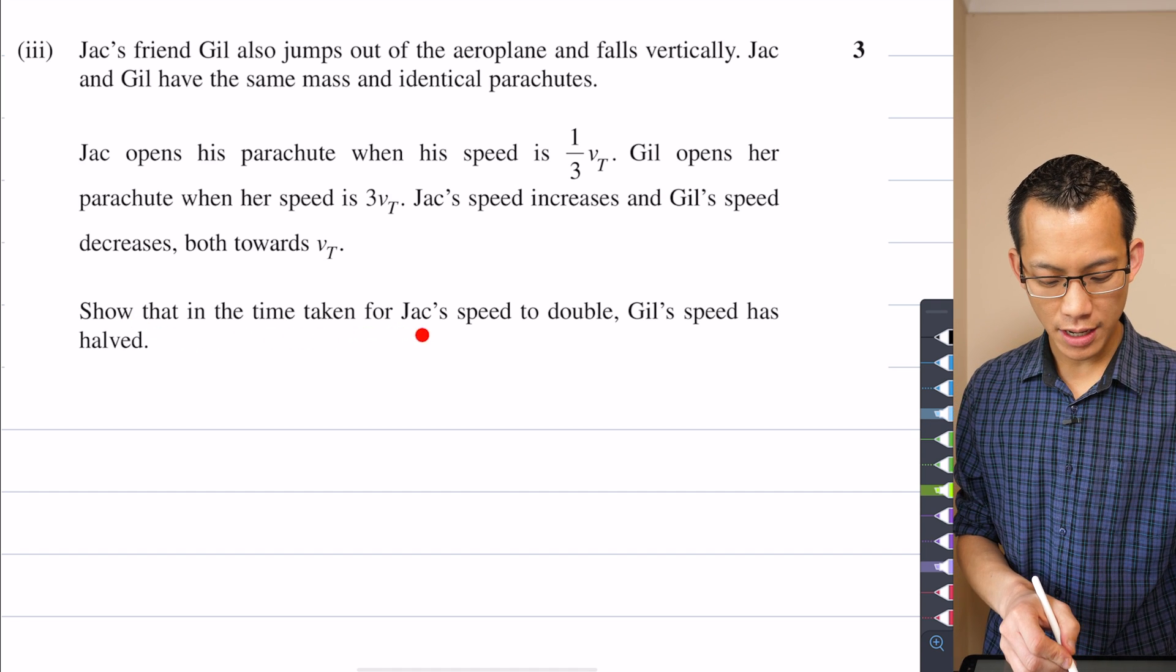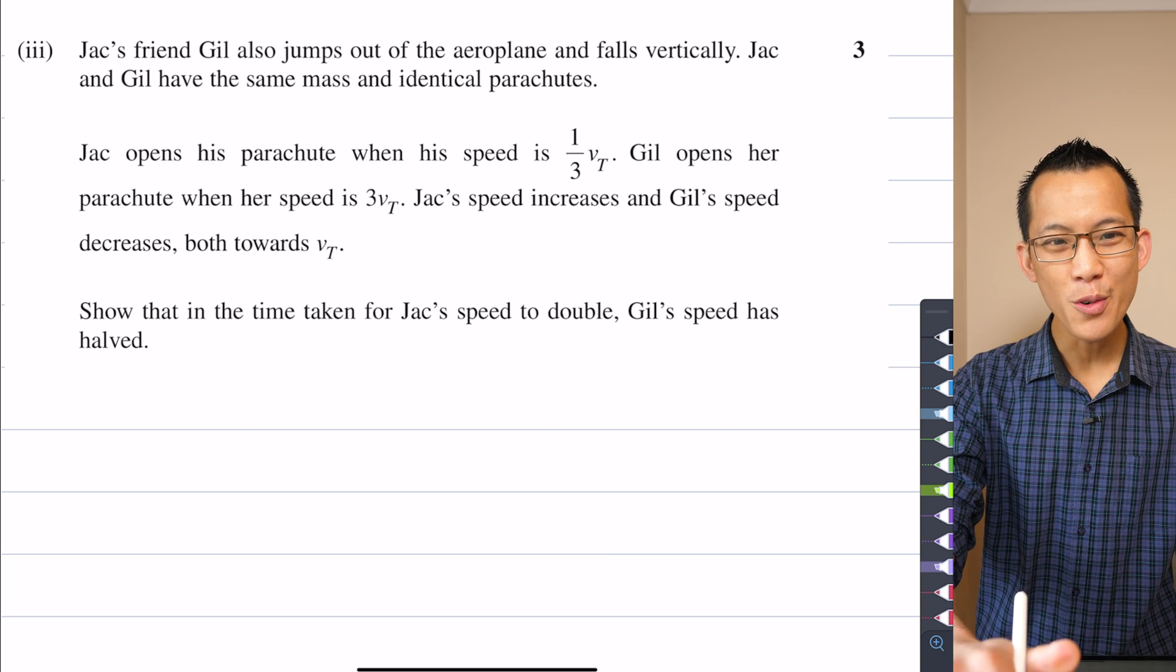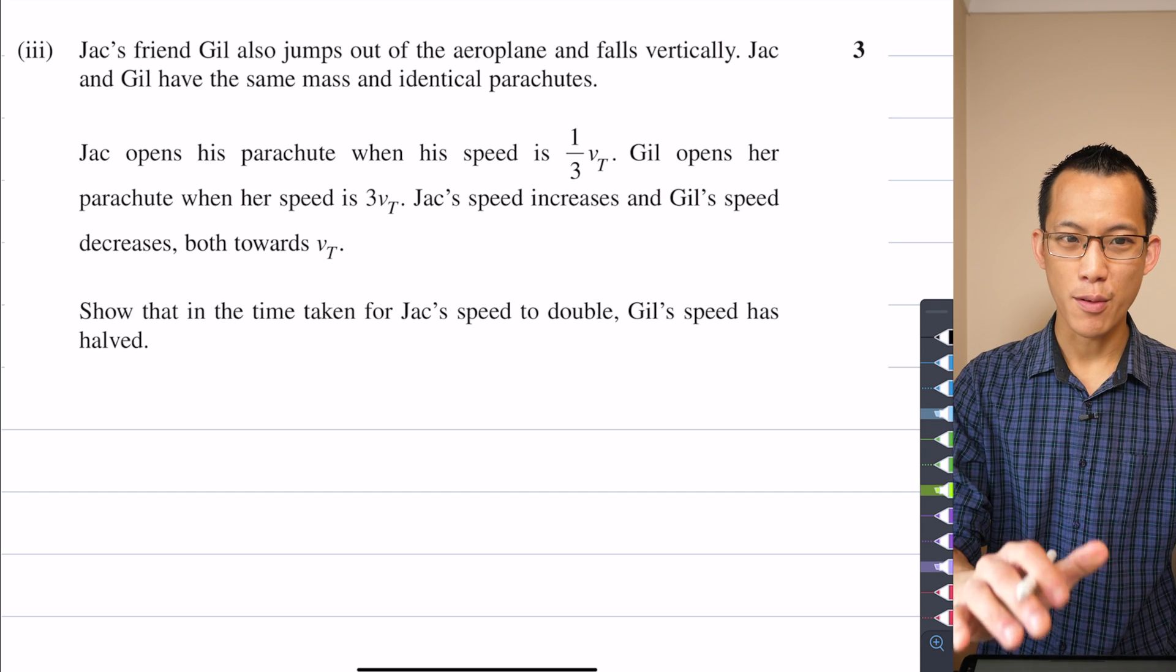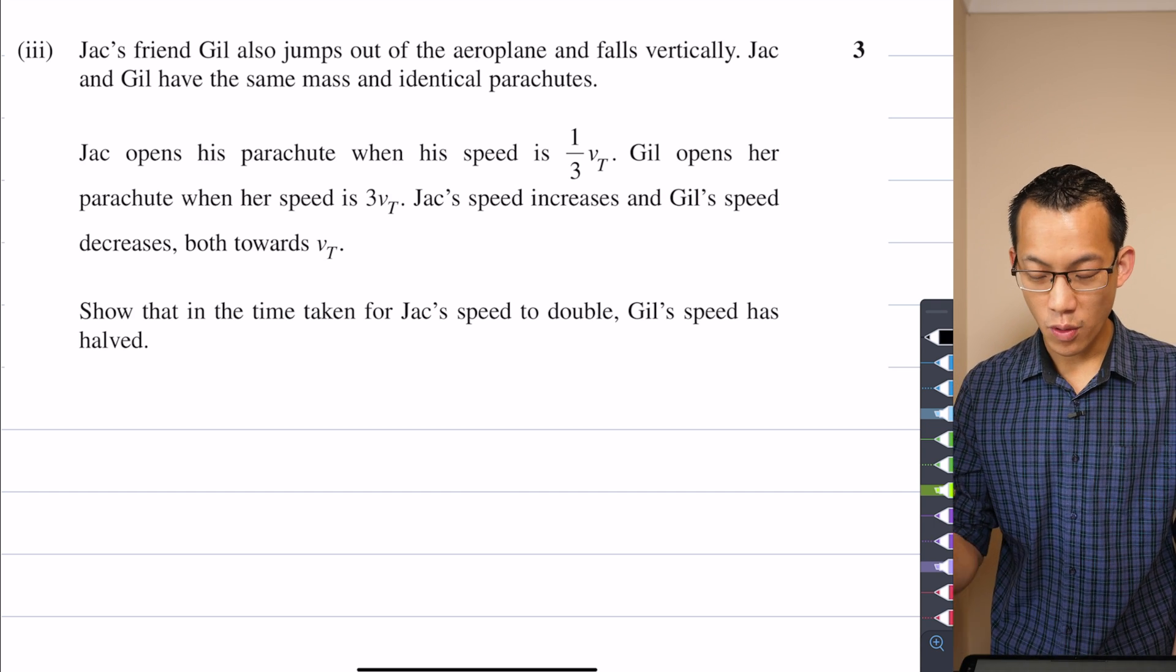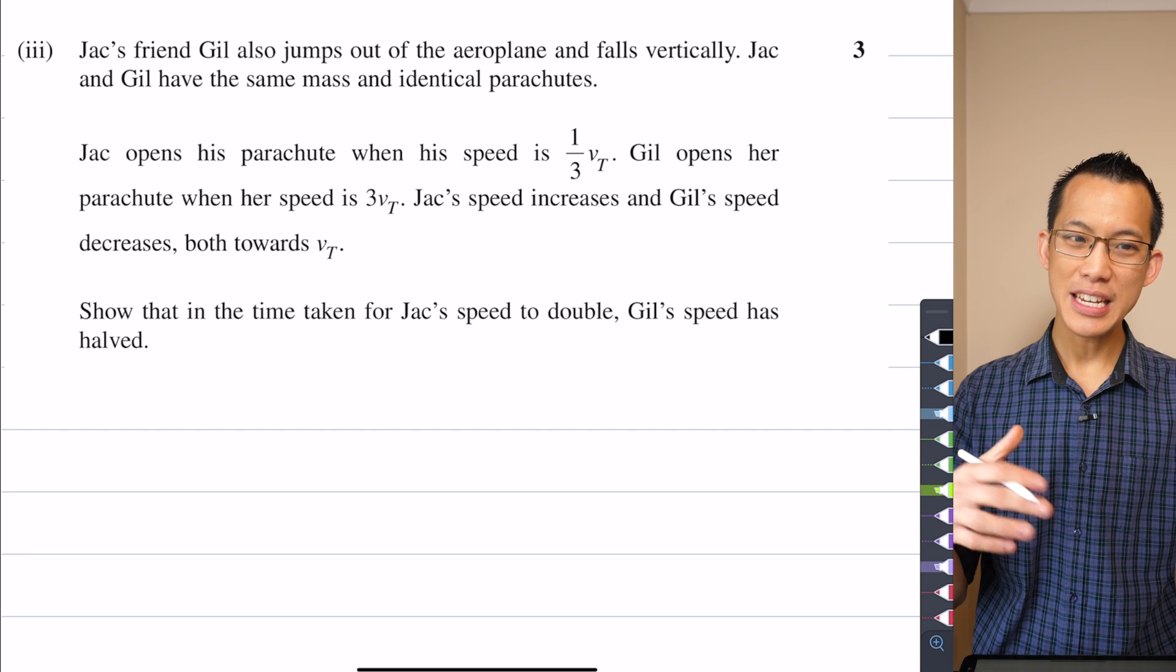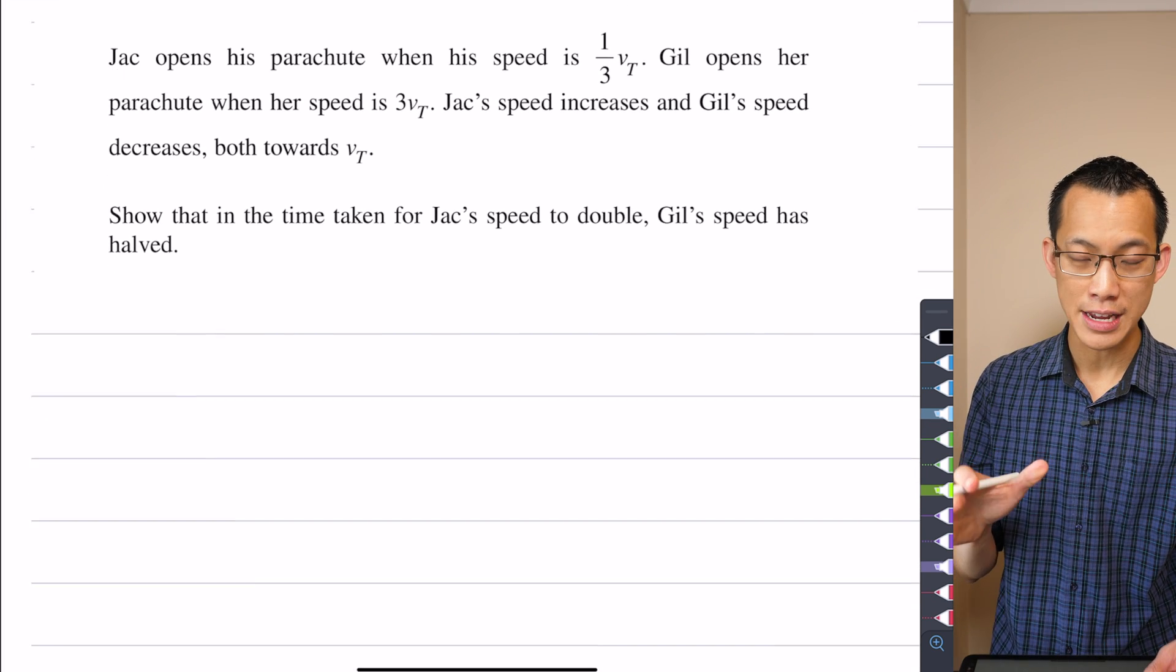Show that in the time taken for Jack's speed to double, Jill's speed has halved. How do we do this? Well firstly remember, V0 is the jumper's velocity once the chute opens. So once you have that in mind, that sort of indicates for Jack and Jill separately what's going to go on here. I've got a separate V0 for each of them.